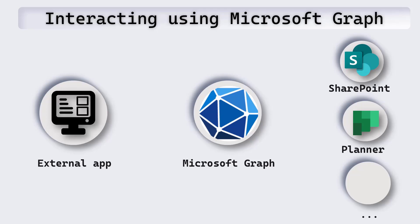This slide is about interacting with Microsoft Graph. On the left side we've got an external app — this is the app that we will be building. In order to access Microsoft 365 data on the right side — which can be anything: SharePoint, Planner, Outlook, Calendar, and so on — for our external app to access that data, we need Microsoft Graph. Our external app asks Microsoft Graph to get us the data from Microsoft 365.